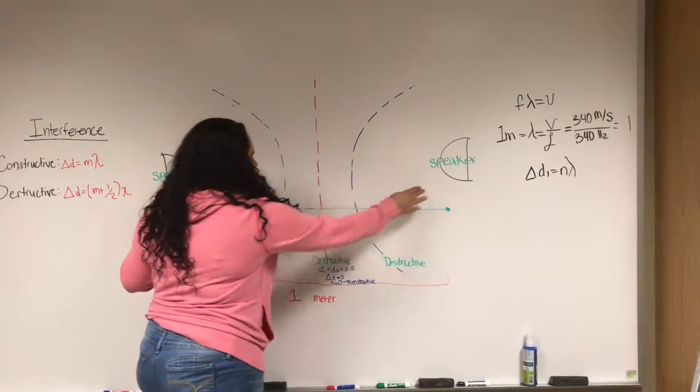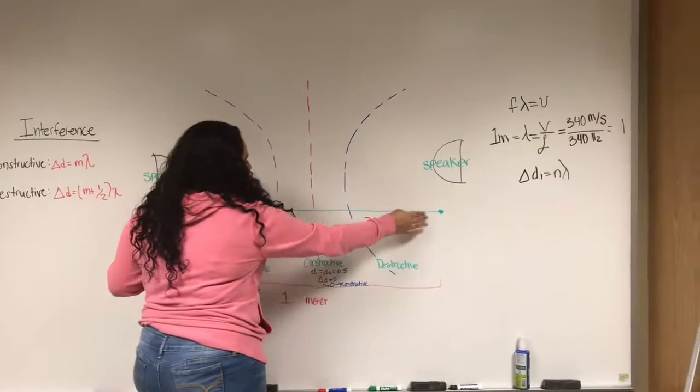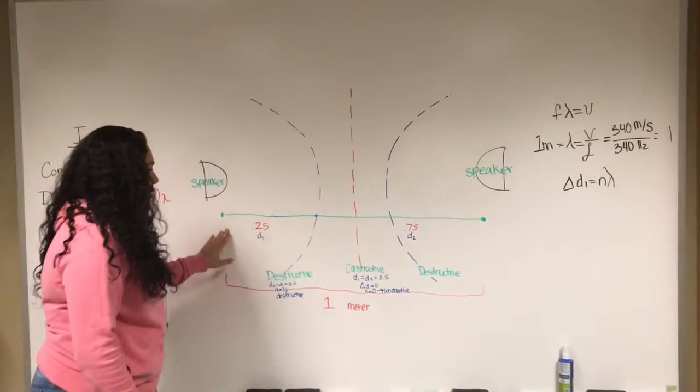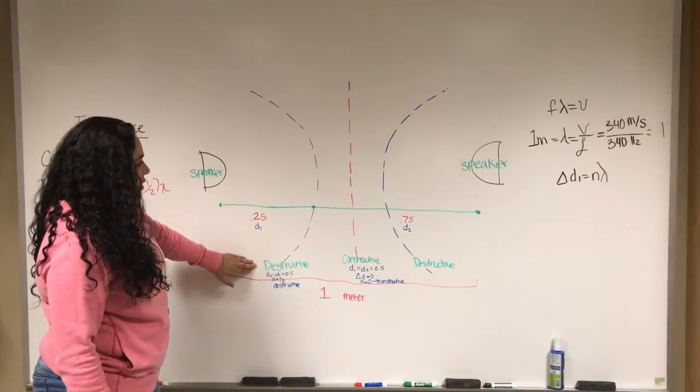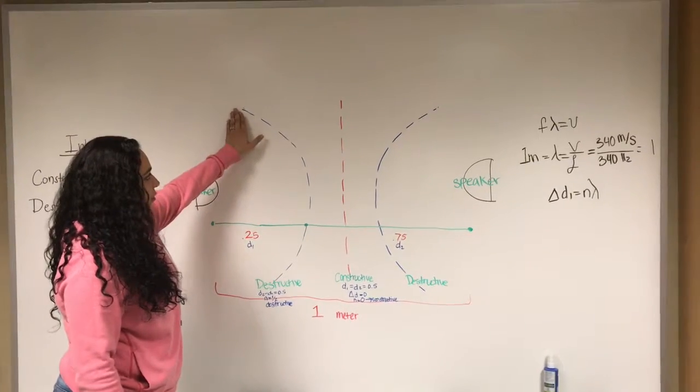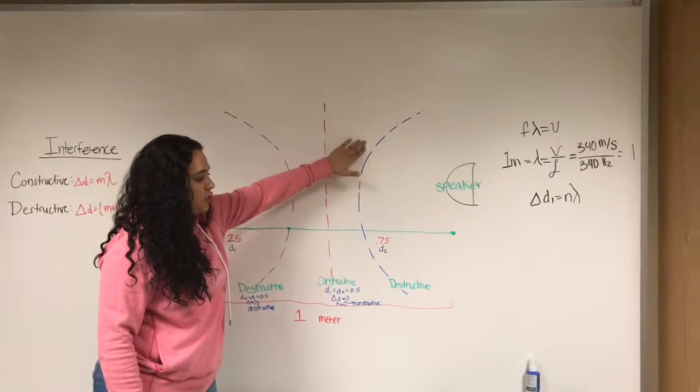Here are the two speakers. This is the ruler demonstrating the length, which is one meter. And so basically this is the destructive, the pattern of the destructive and constructive and again the destructive.